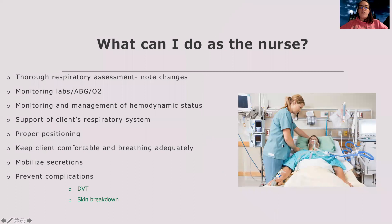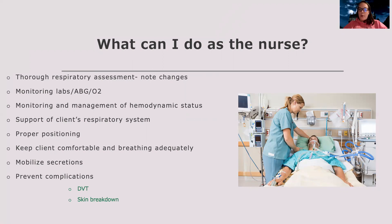What can I do as a nurse? We need to do a thorough respiratory assessment and note any changes — lung sounds, respiratory effort. Monitor their labs, ABG, and oxygen levels, which is key since that is the core problem in ARDS. Monitor and manage their hemodynamic status. This patient is going to be on a lot of PEEP, and as mentioned in the ventilator content, excess PEEP creates excess pressure in the chest, reducing blood returning to the heart and therefore decreasing cardiac output — so as PEEP goes up, blood pressure goes down.